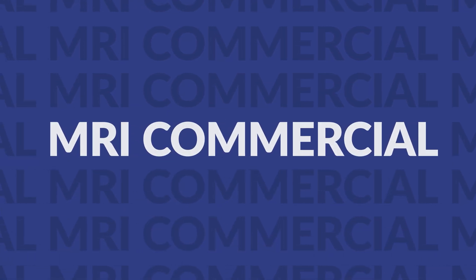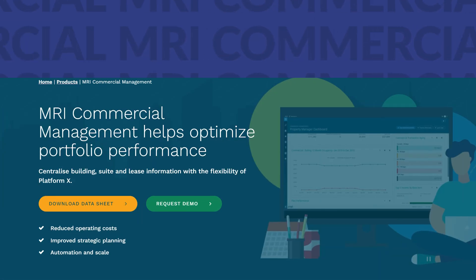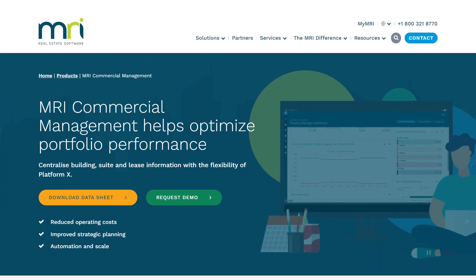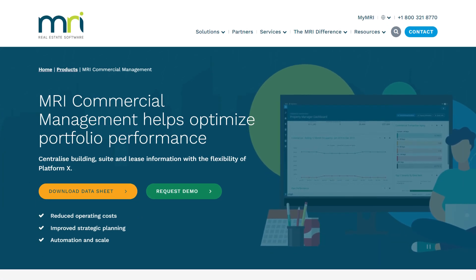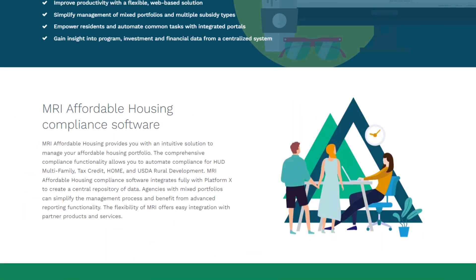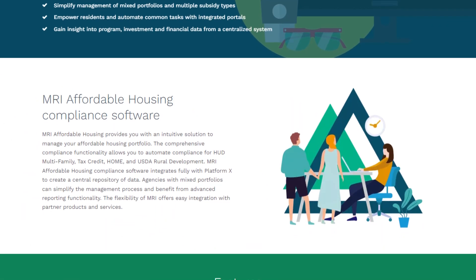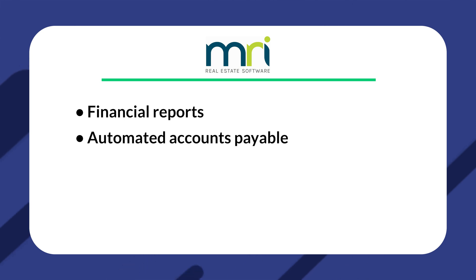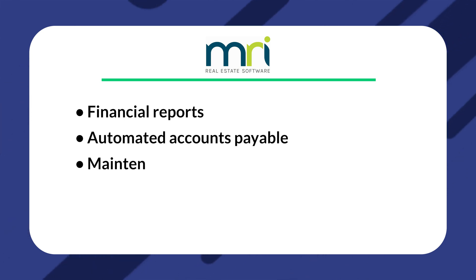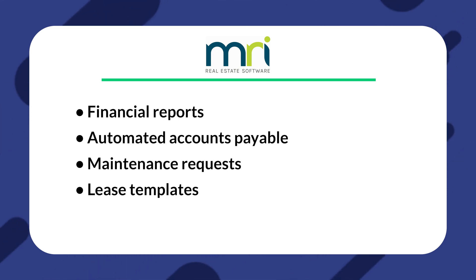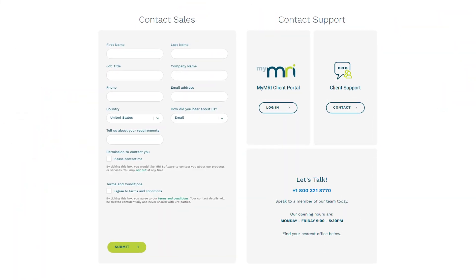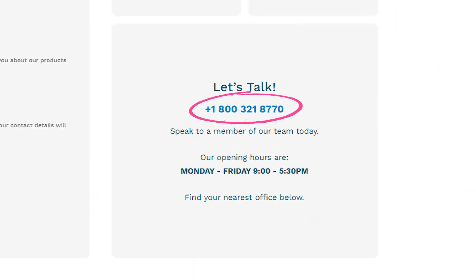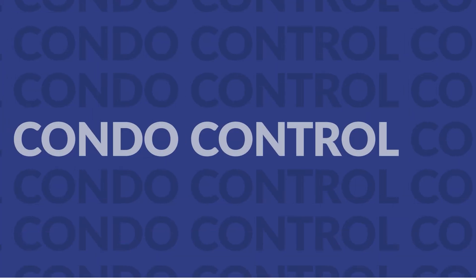Another option is MRI Commercial Suite. MRI is a strong option for those working with commercial properties, though it has separate offerings for residential and affordable housing. Some of their features include financial reports, automated accounts payable, maintenance requests, lease templates, and an owner portal. They don't have their pricing directly on their website, so you'll have to contact them directly to see how much it'll cost.